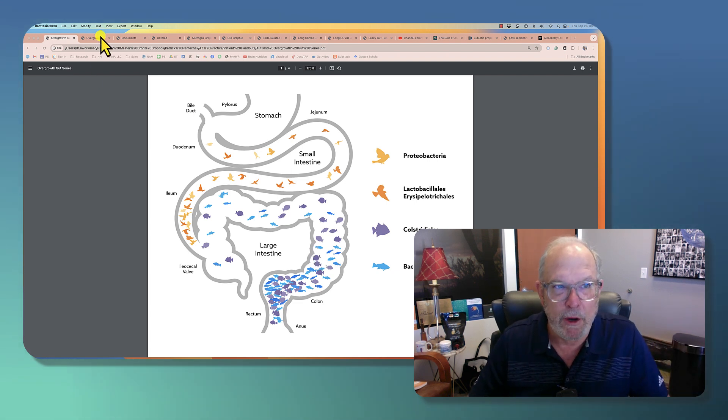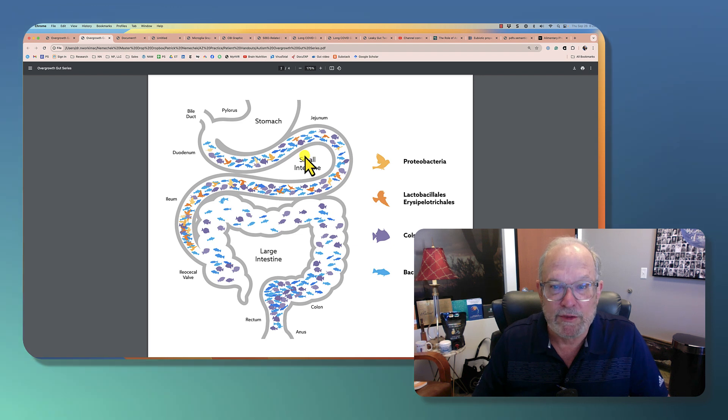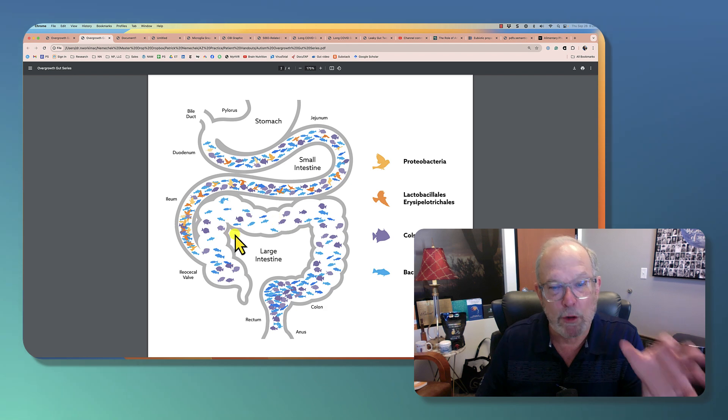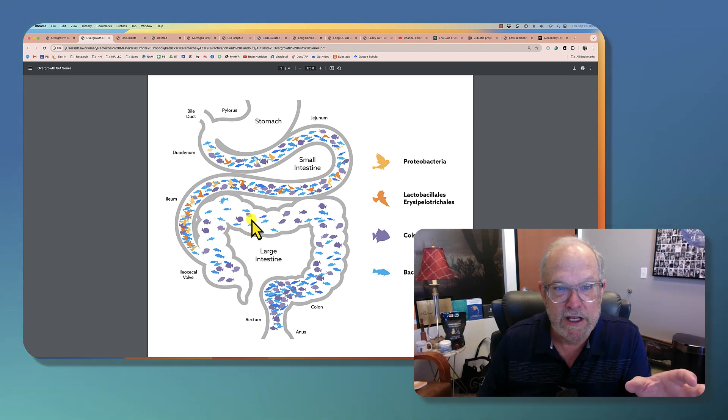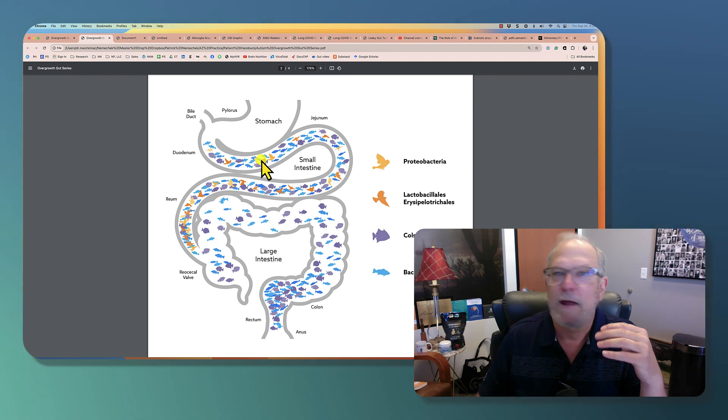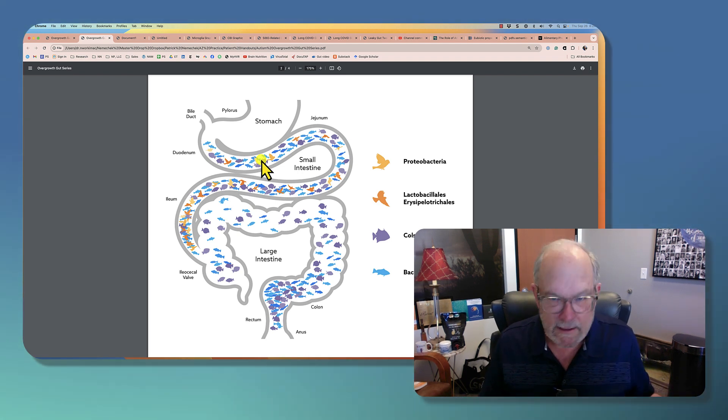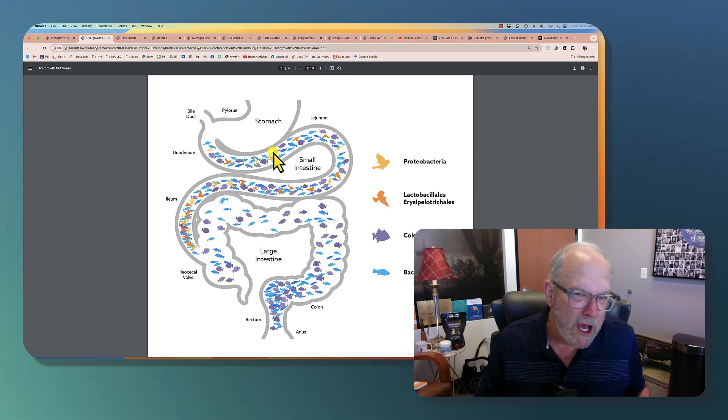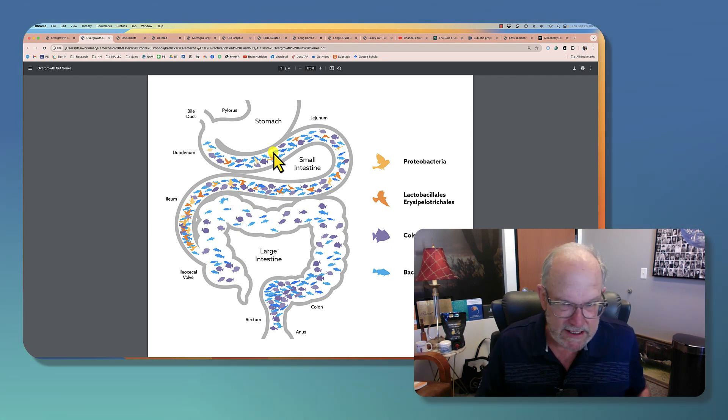Now SIBO, S-I-B-O, small intestine bacterial overgrowth. This is when you have normal bacteria that should be living in the large intestine, now living in the small intestine. This is not foreign bacteria, it's not bad bacteria, they're normal bacteria. And when you have overgrowth it's typically one, maybe two species up there.